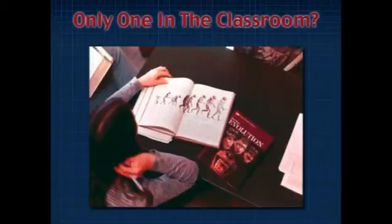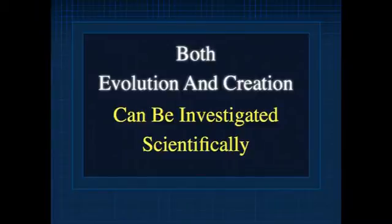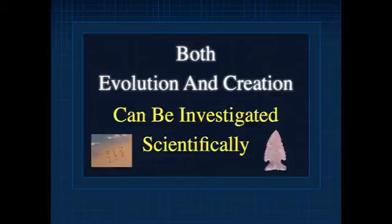There are variations of each, but if we understand there are only two, we can address the objection: 'You are only arguing against evolution with no evidence for creation.' We will be dealing with the evidence for evolution and showing it is not valid. But if there is only A or B, and you show it is not A, you have given a positive argument for the other. However, we are only allowed to have one of these views in the classroom — you can only teach evolution, because that is science, and creation is religion. I think that is naive to the point of being absurd. Both evolution and creation can be investigated scientifically.